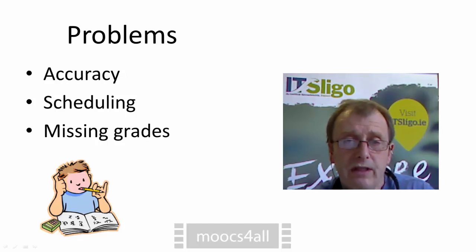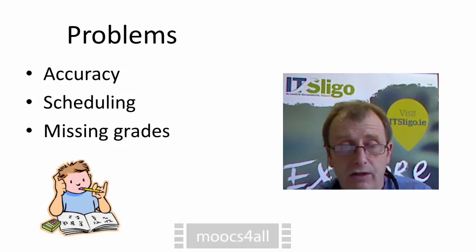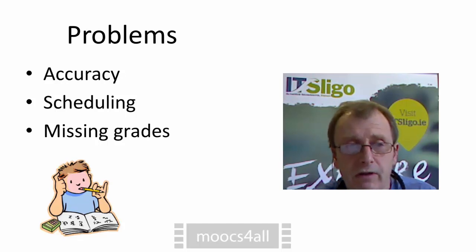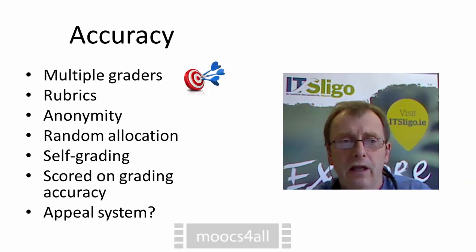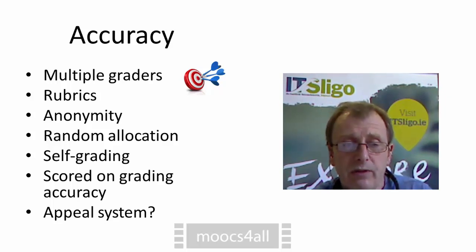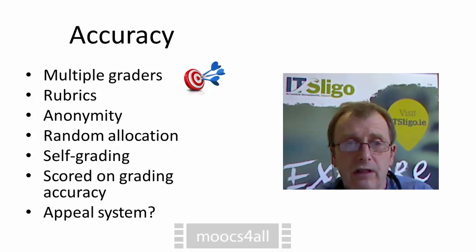So there are several problems in peer assessment that we have to watch out for. The first one is the accuracy of grading, the second is the scheduling of when grading will take place, and the third is the problem of assignments not being graded at all. In terms of accuracy, steps that improve it include: having multiple graders makes you more likely to get an accurate result, the use of rubrics helps people grade accurately, and anonymity can help reduce the possibility of cheating.